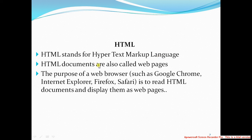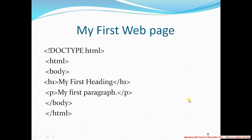HTML documents are called web pages. For you to really understand how this works, you need to have a web browser. Web browsers are things like Internet Explorer, Firefox, Mozilla Firefox, Safari, and Google Chrome. Most computers come with one of these web browsers. You need a web browser to interpret the code that you've written in HTML for you to see the effect.